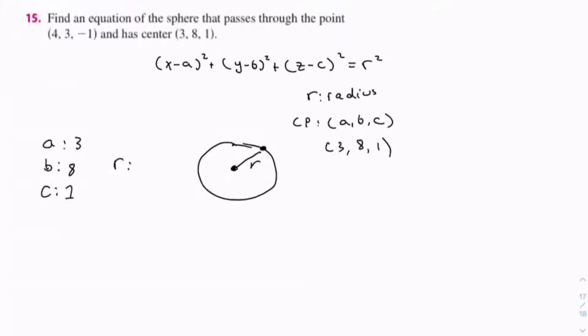We can use the distance formula to do this. Let's say (3, 8, 1) is P₁, and P₂ is (4, 3, -1).